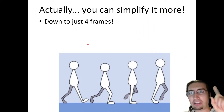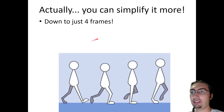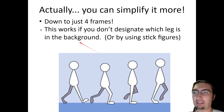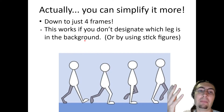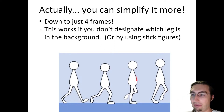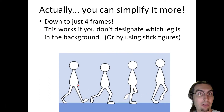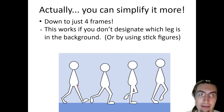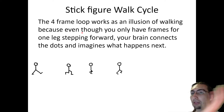So there are just eight positions to make a walk cycle, but you can simplify it even more — you only need four frames, not eight. You just need these four frames, as long as you don't designate which leg is in the background. You can use a stick figure. If you don't indicate which leg is in front or back, it blends together and you only need four frames.